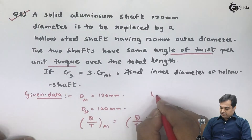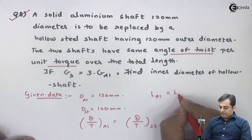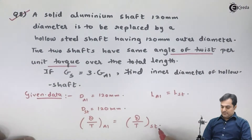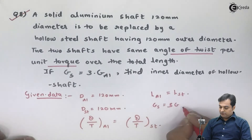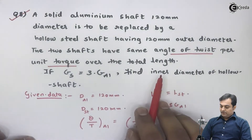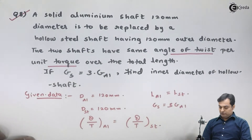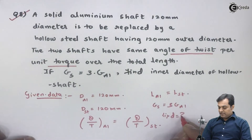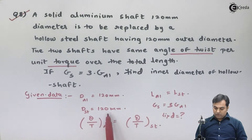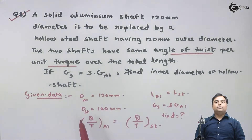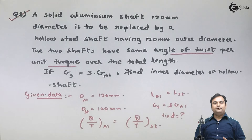Over the total length means the length also remains the same, so the length of aluminium equals the length of steel. It is given that the modulus of rigidity of steel is three times the modulus of rigidity of aluminium. We have to find the inner diameter of the hollow steel shaft. This is a conceptual kind of problem.